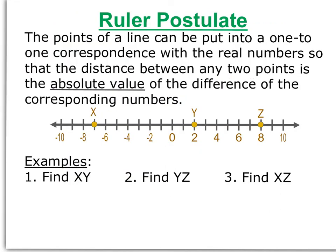The ruler postulate says the points of a line can be put into a one-to-one correspondence with the real numbers so that the distance between any two points is the absolute value of the difference of the corresponding numbers. So that means on our number line, if we wanted to find the length of XY, we could take the absolute value of X's coordinate, which is negative 7, minus Y's coordinate, which is 2. We would get absolute value of negative 9, or 9. Remember, distance is always positive, so the length of XY is 9.